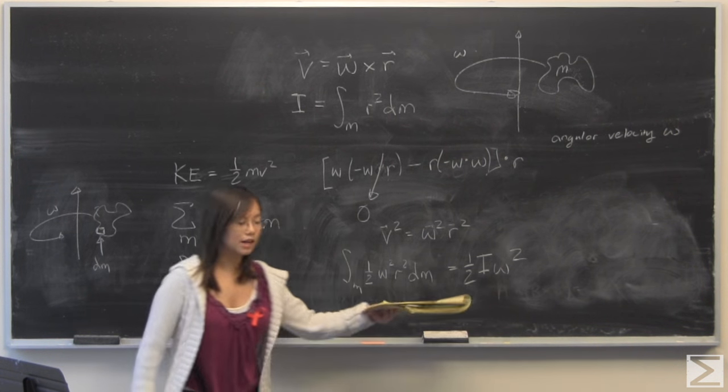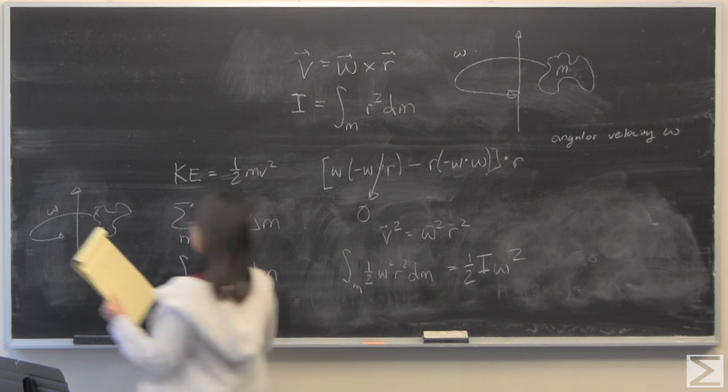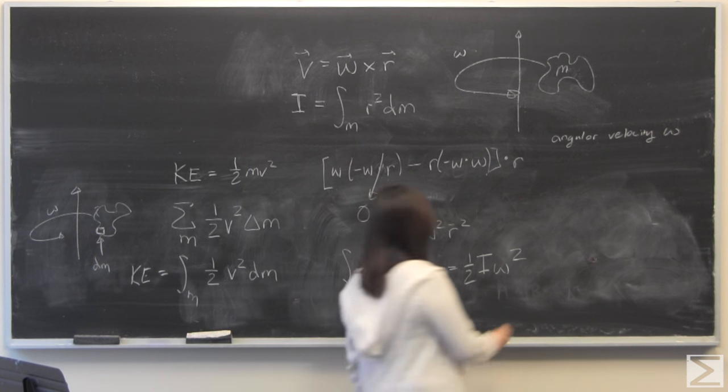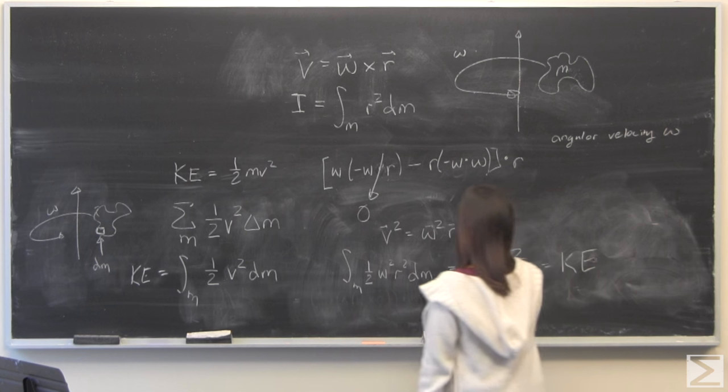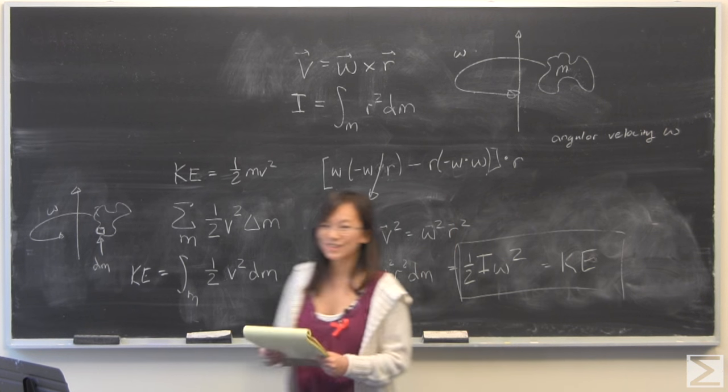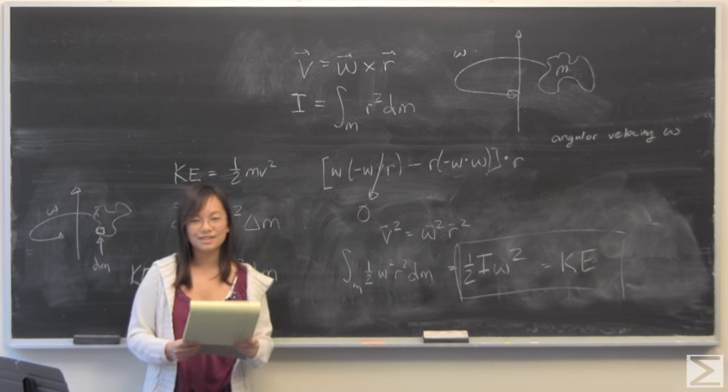So this whole thing becomes 1/2 I ω². And what was this all representing before? Well, I should have written this before, but it was representing kinetic energy. And thus, we have shown the undeniable connection between angular and linear. I thought that was a very cool result, and you could only get there if you knew some vectors and some other properties.